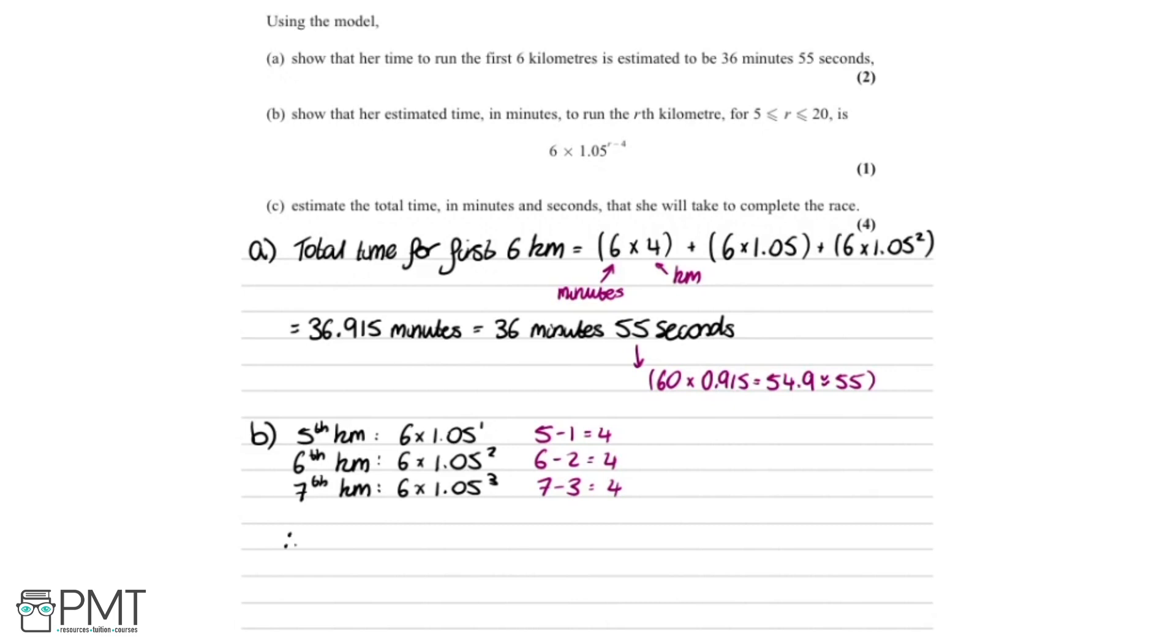So we've basically shown it there. Therefore, it follows that the time taken for the rth kilometer is 6 times 1.05 to the power of r minus 4.